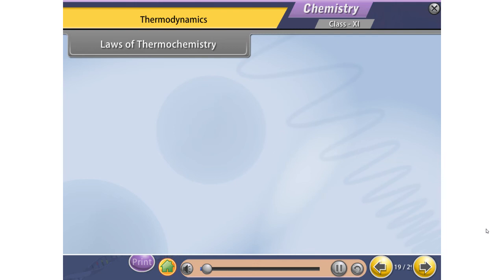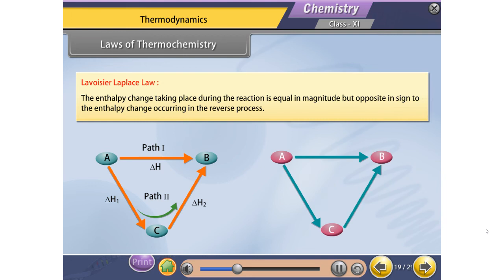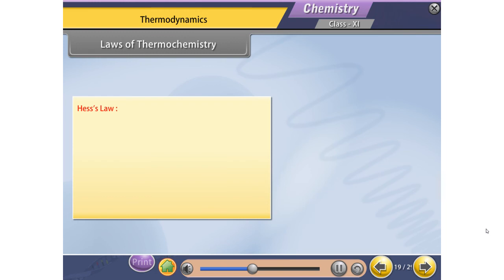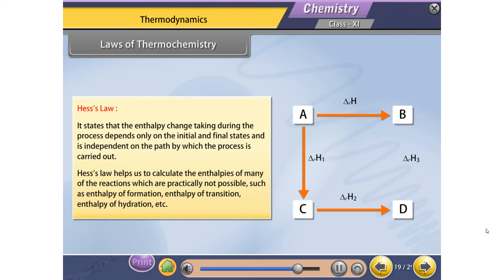Lavoisier-Laplace Law states that the enthalpy change during a reaction is equal in magnitude but opposite in sign to the enthalpy change occurring in the reverse process. Hess's Law states that the enthalpy change during a process depends only on the initial and final states and is independent of the path by which the process is carried out. Hess's Law helps calculate enthalpies of reactions not practically possible, such as enthalpy of formation, enthalpy of transition, enthalpy of hydration, etc.